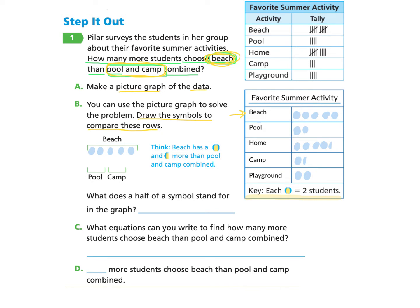Pool has two symbols, so we draw those in. Camp has one and a half symbols, so we draw one and a half. Once we've drawn in camp, we can compare beach to pool and camp together. Looking at the think section: beach has a whole beach ball and a half more than pool and camp combined.